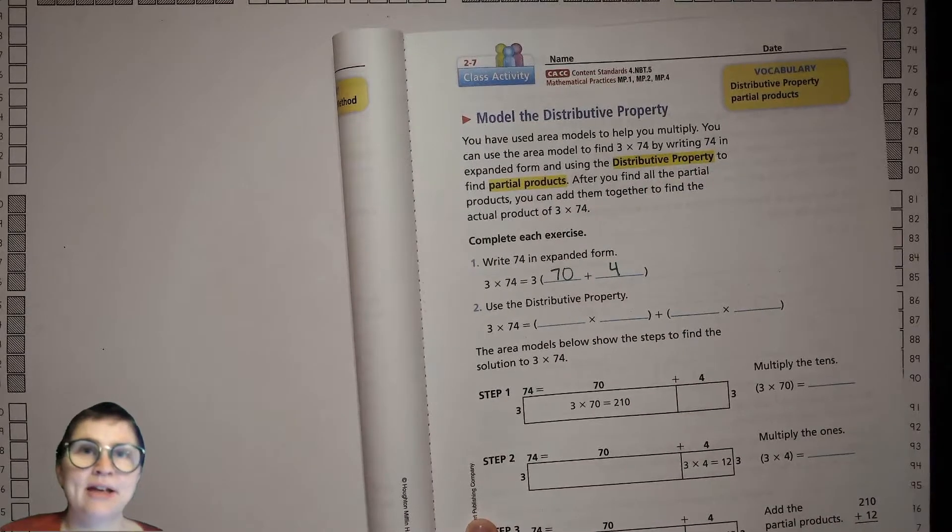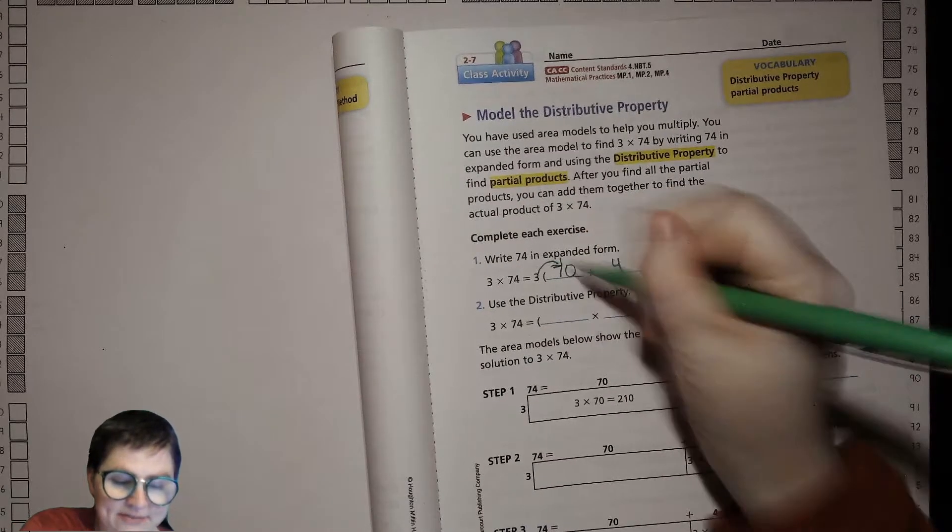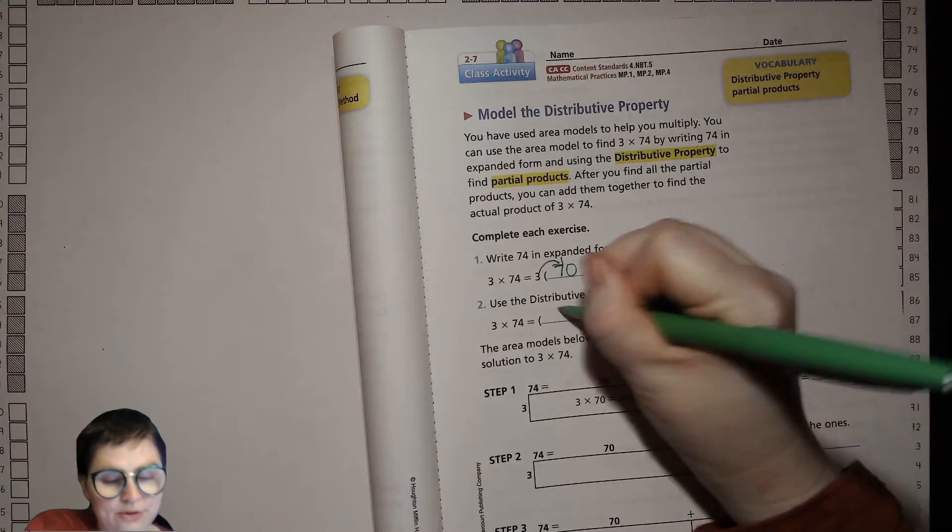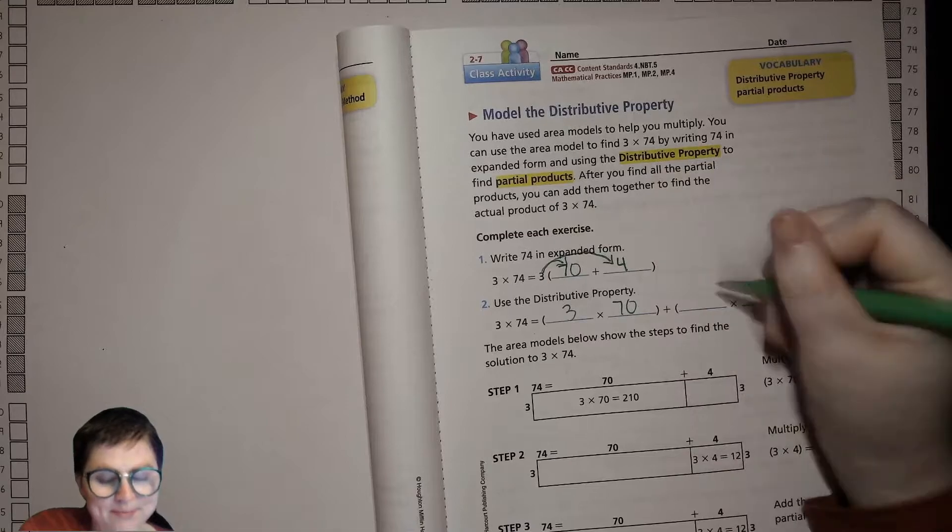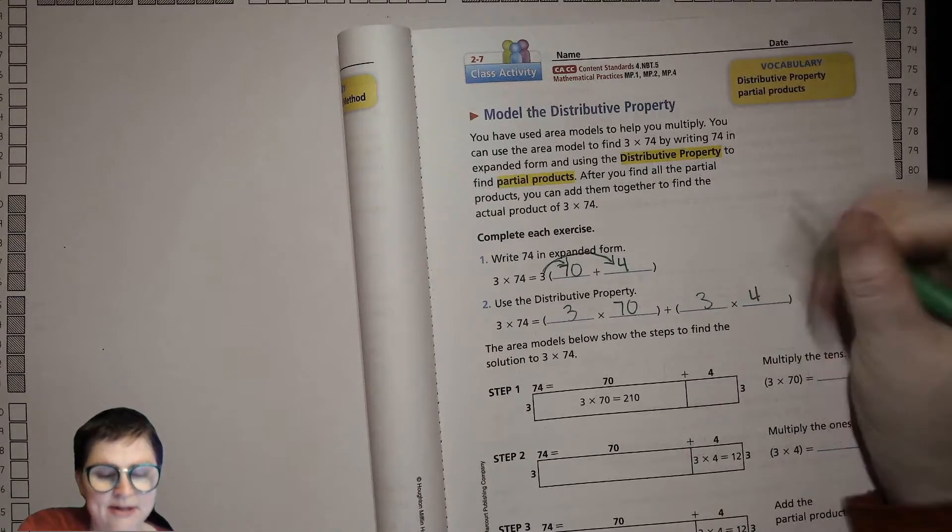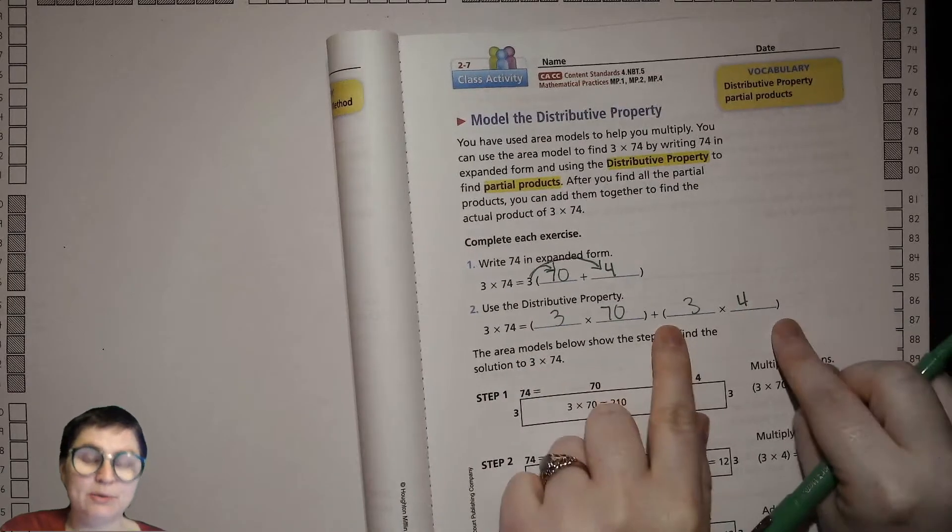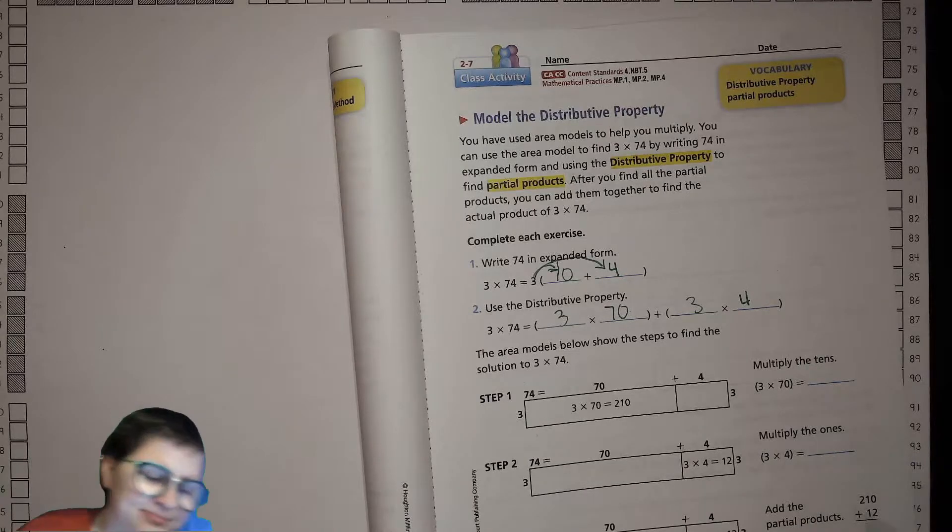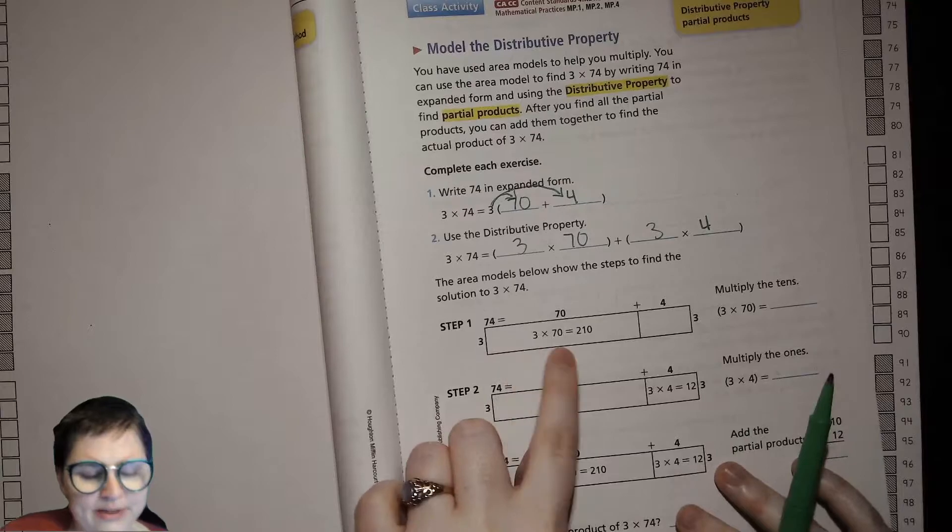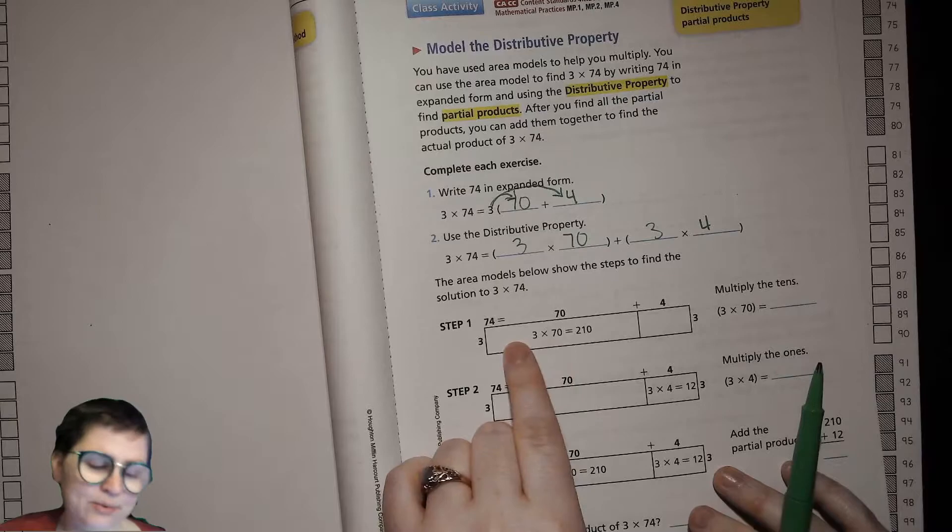We're first going to write the 74 in expanded form, so that is 70 plus 4. Then we will use the distributive property and do the 3 times 70 and the 3 times 4, and we're putting that in parentheses so we know to do that first before we start doing any adding because of our order of operations.